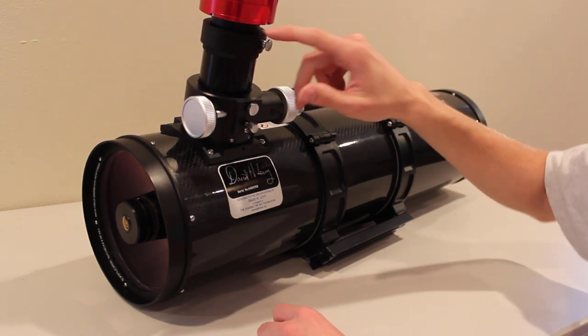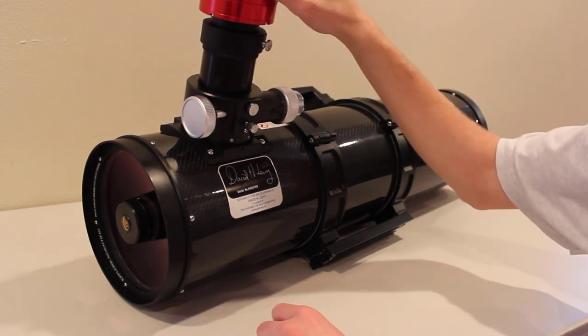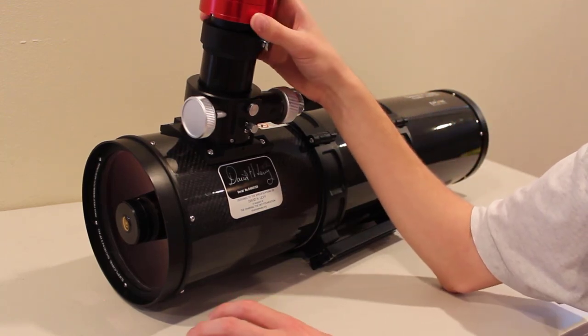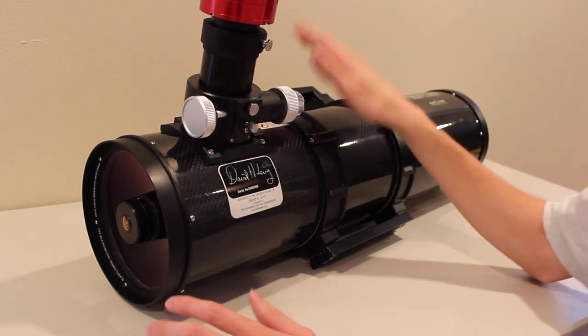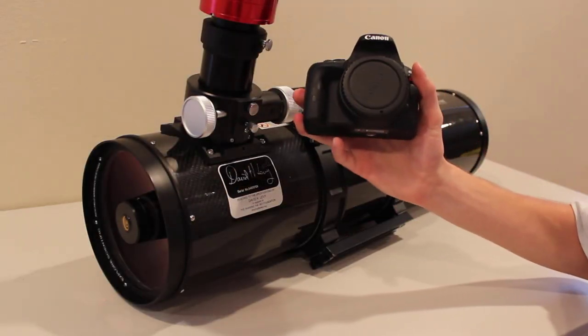And I even have the 11 millimeter ring attached and I still don't have a problem getting focus. So even the bigger sensors on the ZWO cameras that have the 17 and a half millimeters of back focus built in, it's pretty easy to obtain focus on a Newtonian.